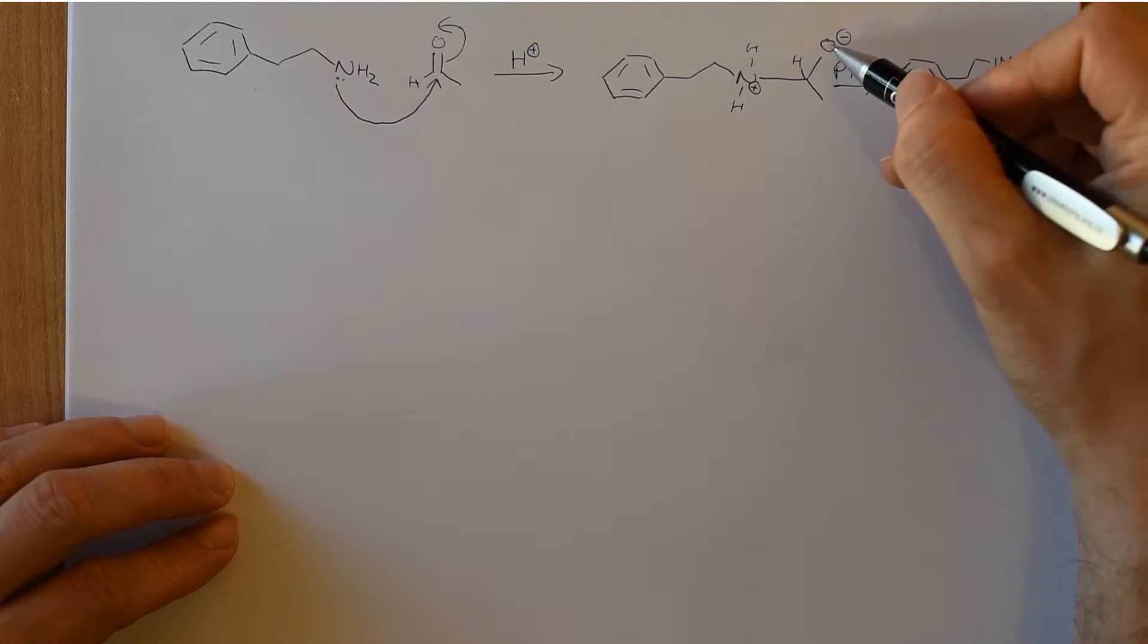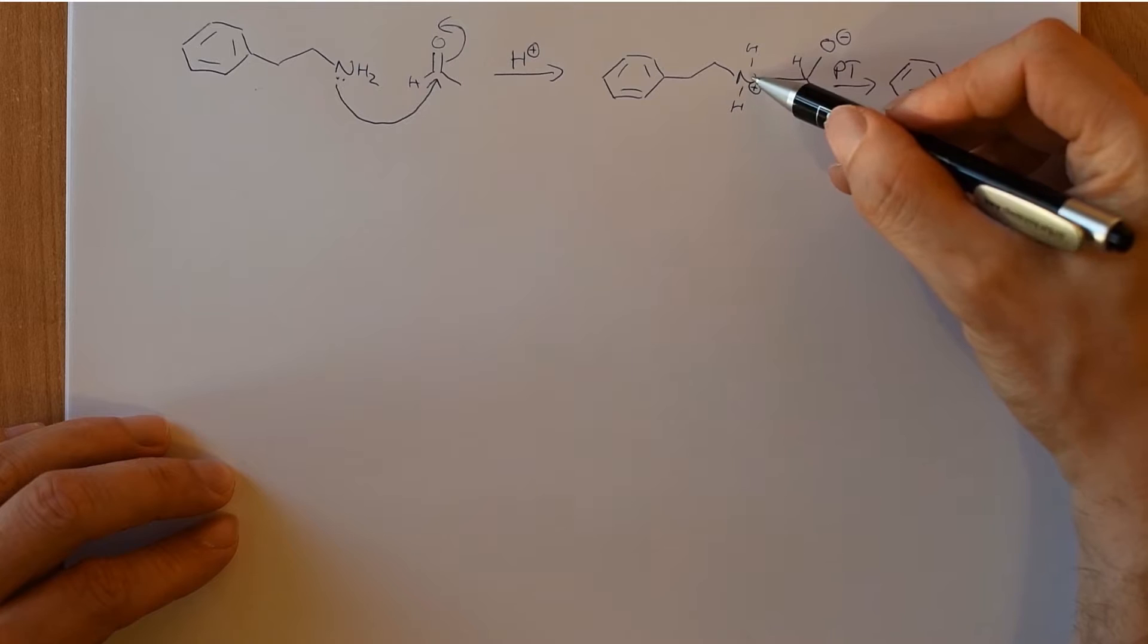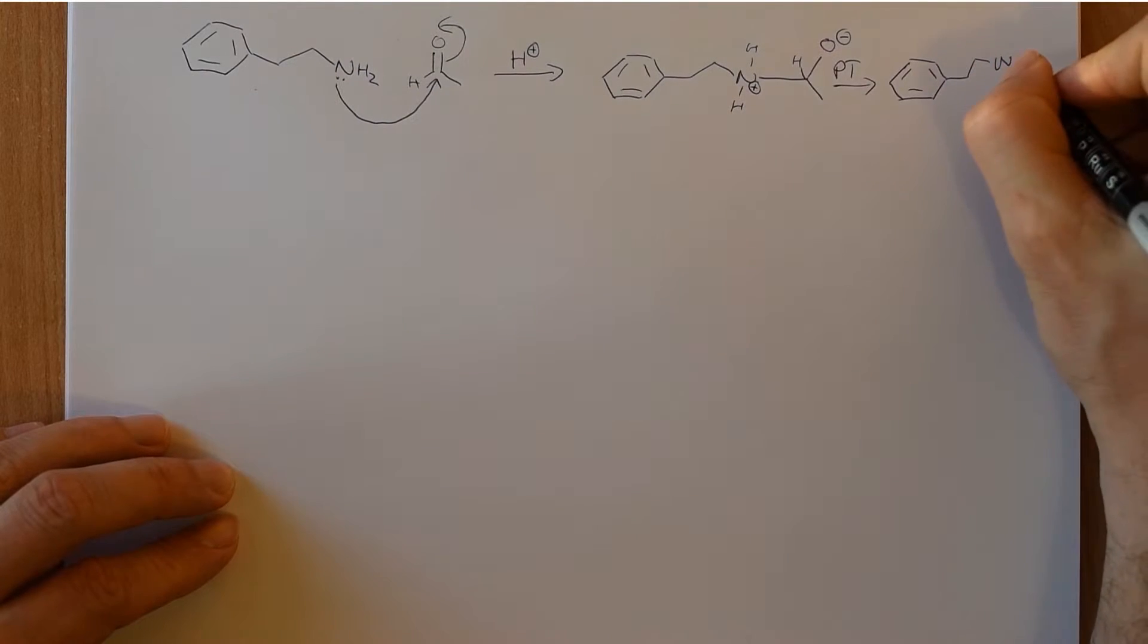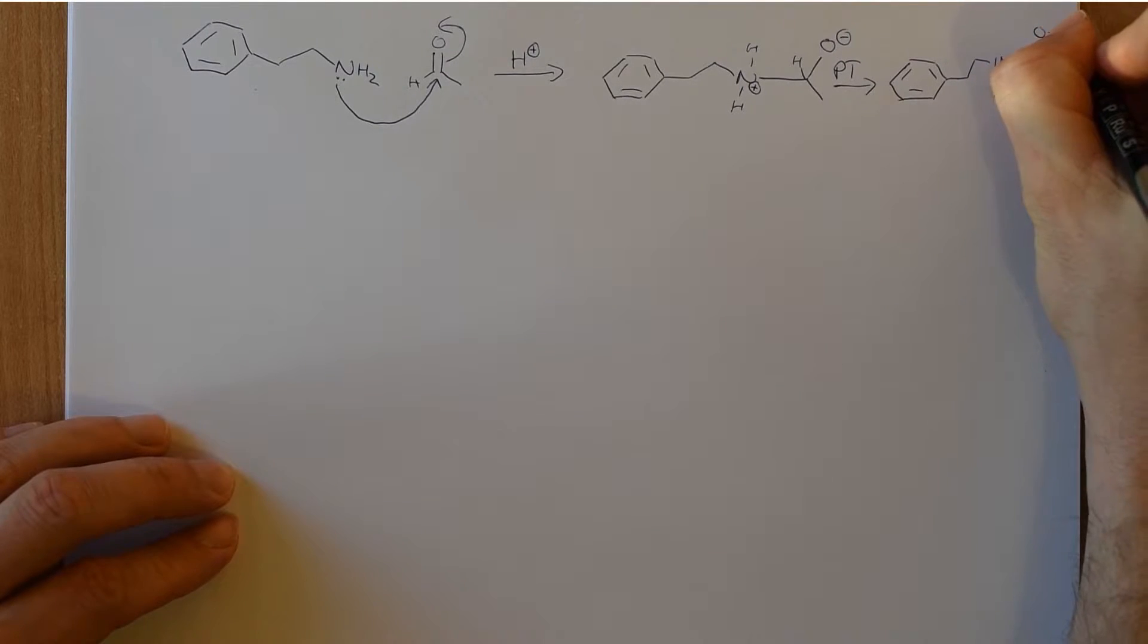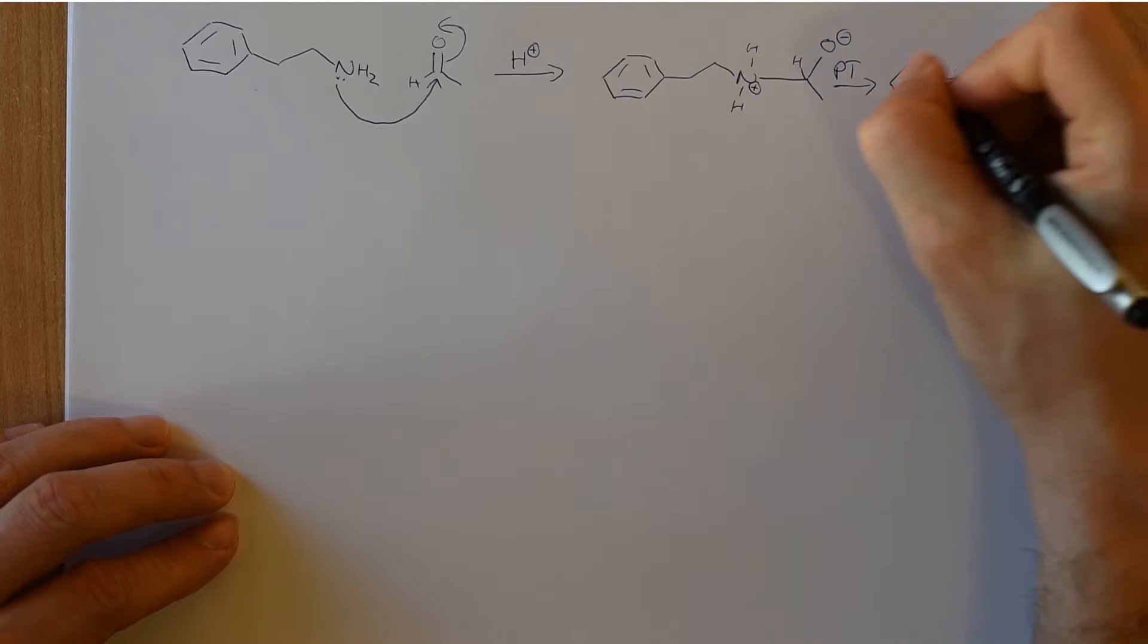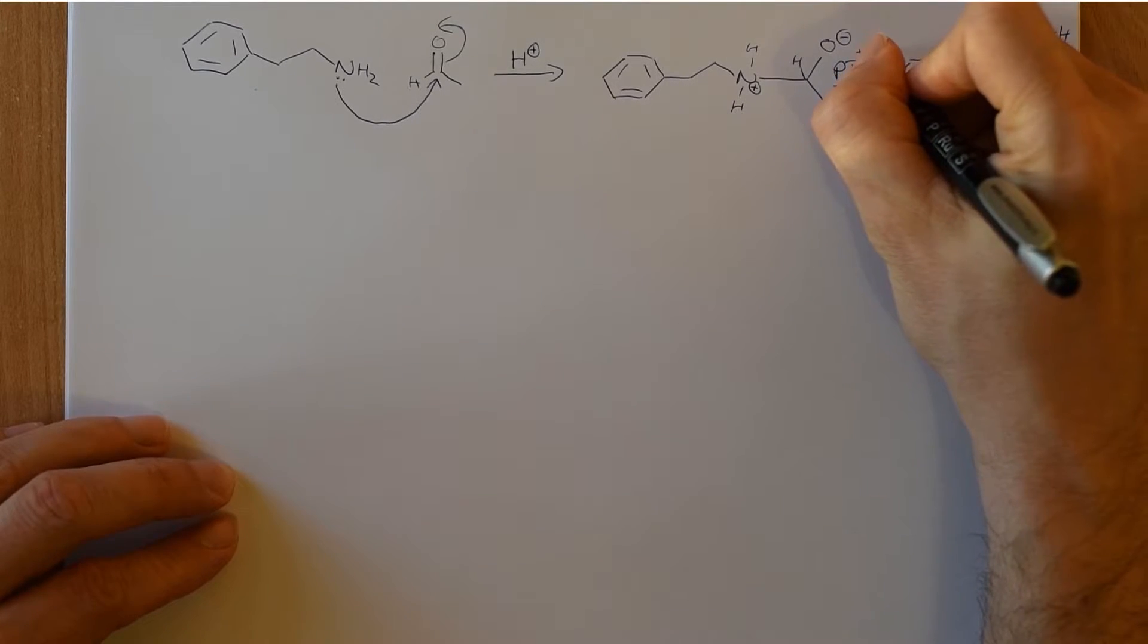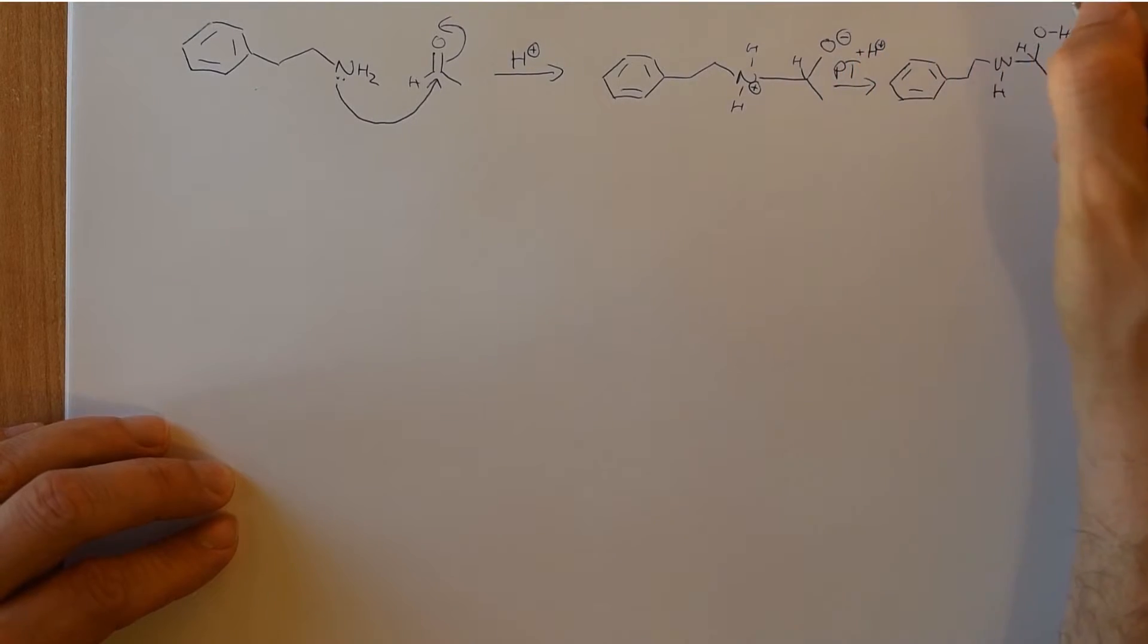It seems unlikely that you would have an oxygen with a negative charge in the same molecule as an ammonium with a positive charge for any great length of time. So we will transfer that, make the alcohol, make the amine, still have the methyl group, still have the hydrogen. And at the same time we are also going to add in our proton from our acid.